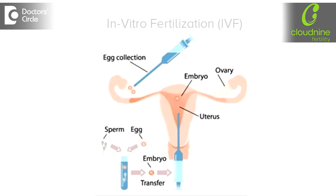IVF is essentially comprising of four steps. The first step is called ovarian stimulation. Then comes the egg retrieval. Then comes the fertilization and the growth of the embryos in the lab. And the last is the embryo transfer.